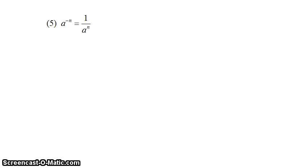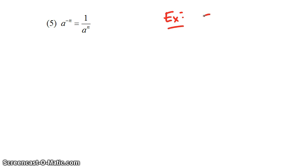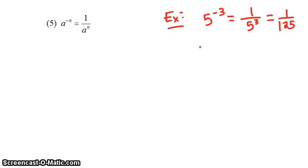A to the negative n is equal to 1 over a to the n. Let's look at a couple quick examples. 5 to the negative 3rd power is equal to 1 over 5 to the positive 3rd, or in other words, 1 over 125. 4 to the negative 2 power is equal to 1 over 4 to the positive 2, which is equal to 1 over 16.